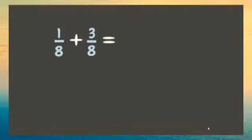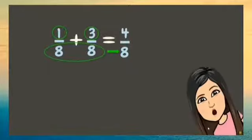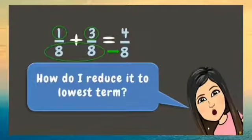Let's try some more examples. One-eighth plus three-eighths. Add the numerators: 1 plus 3 equals 4. Copy the common denominator, 8. Now let us simplify this fraction. But how do we reduce it to lowest term?